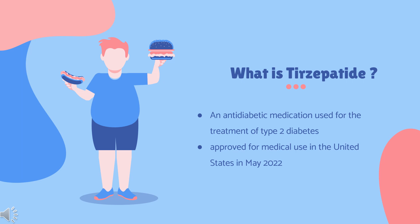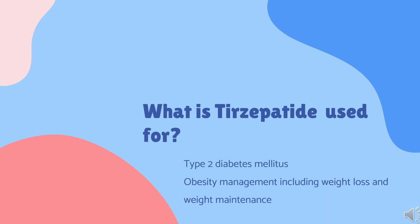The U.S. Food and Drug Administration (FDA) considers it to be a first-in-class medication. Tirzepatide is indicated as an adjunct to diet and exercise to improve glycemic control in adults with type 2 diabetes mellitus.